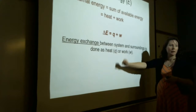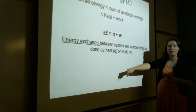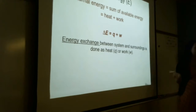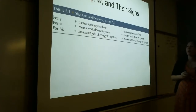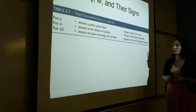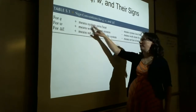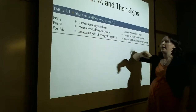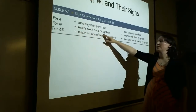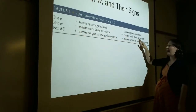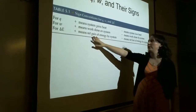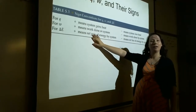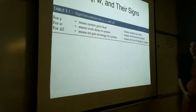Heat can go into or come out of the system; work can be done on or by the system. If Q is positive, the system is gaining heat; if Q is negative, the system is losing heat. If W is positive, work is done on the system. If delta E is positive, energy is being gained by the system.